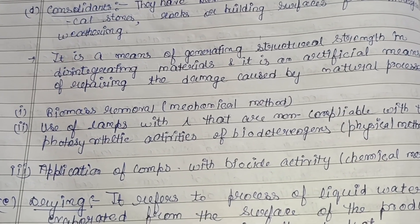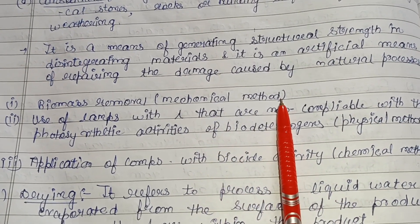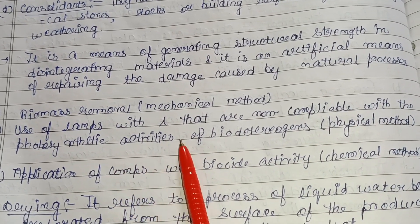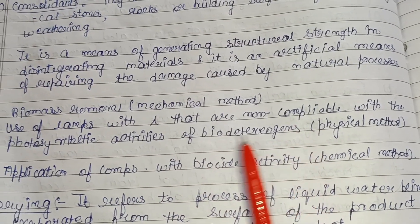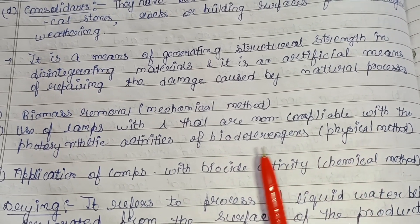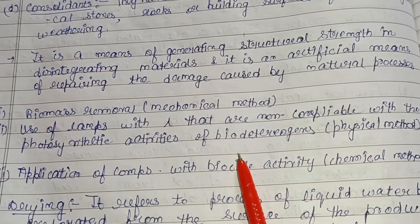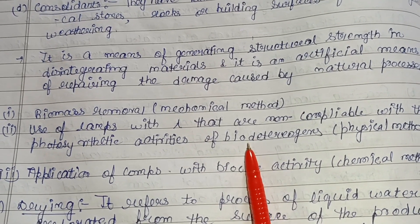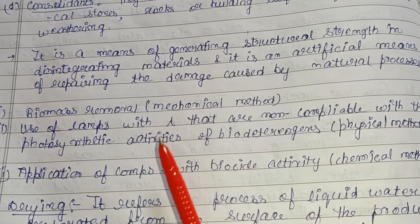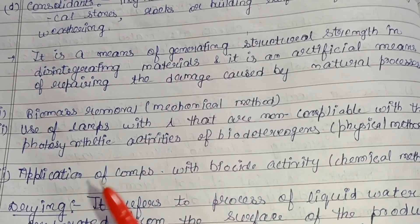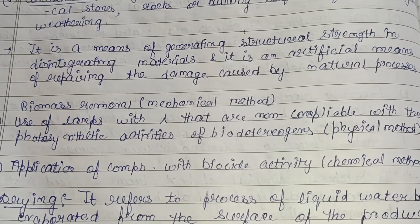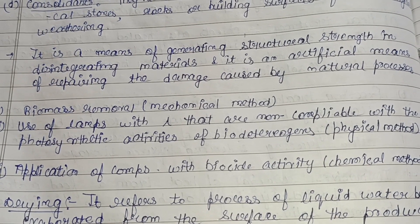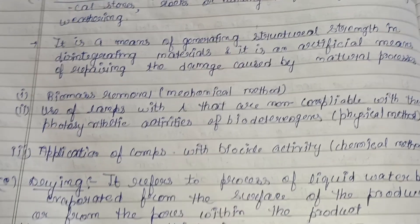Biomass removal is a mechanical method. It also involves the use of lamps with wavelengths that are non-compatible with the photosynthetic activities of bio deterioration agents. For example, some bacteria are photosynthetic in nature and utilize light, so we use lamps with a certain wavelength that is incompatible with them to control and prevent them. Application of compounds with biocidal activity is the chemical method.